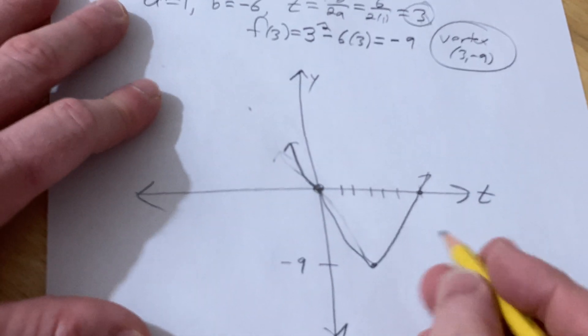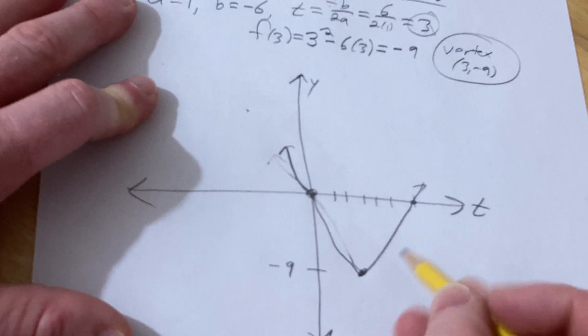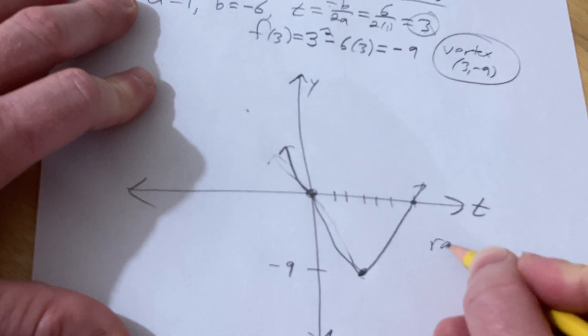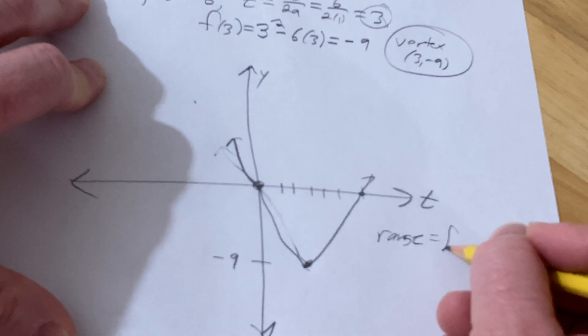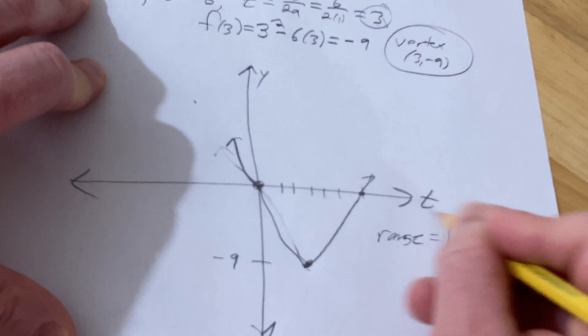And then the range is all the y-values. So the smallest y-value is negative 9, and there's a dot so you include it. So the range would be negative 9 to infinity because it goes up forever.